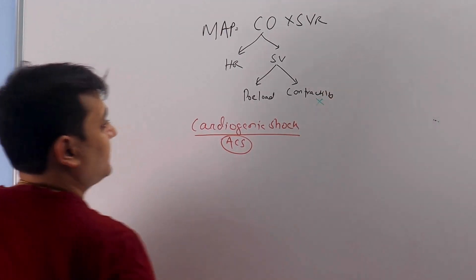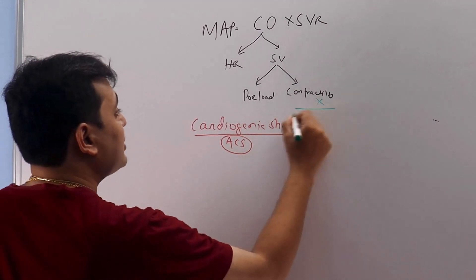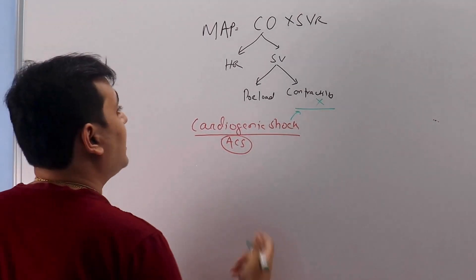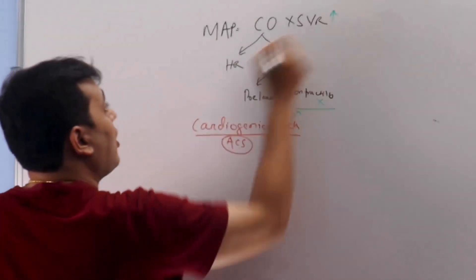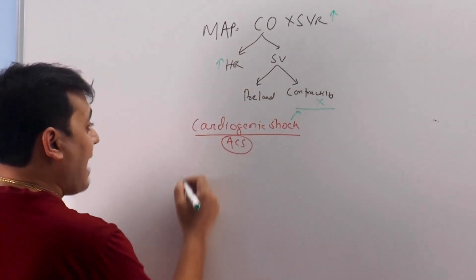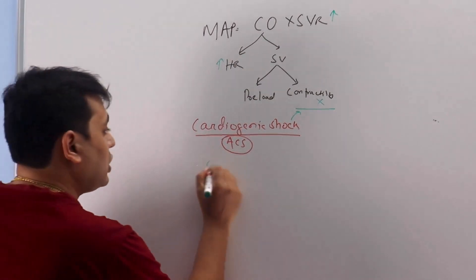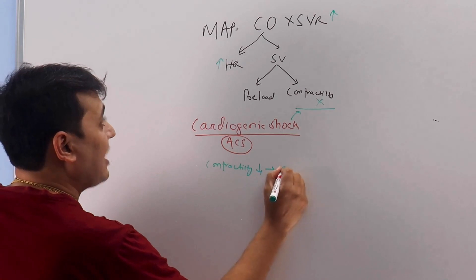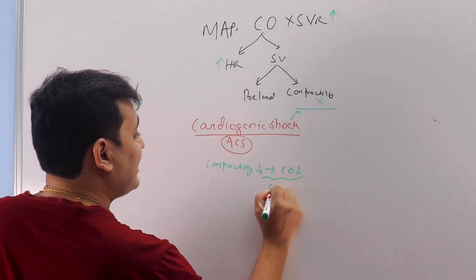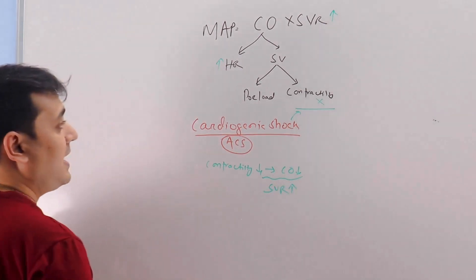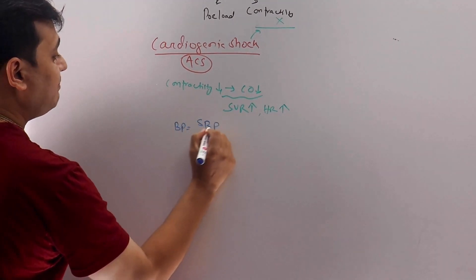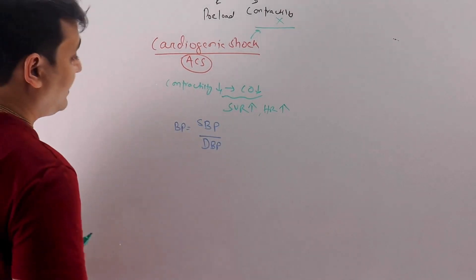In cardiogenic shock, contractility is compromised. In the early compensatory period, the body tries to maintain arterial pressure by increasing SVR, heart rate, or both. So contractility goes down, causing cardiac output to go down, which causes SVR to go up and heart rate to go up.